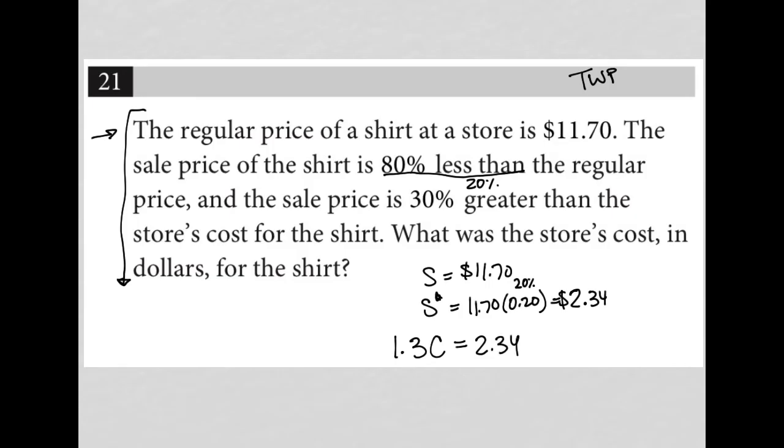So what does this 1.3C mean? It means the cost, which we're not aware of the exact amount of. But once you multiply it by 1.3, what's 1.3? 1.3 is a decimal version of 130%. 130% is the translation for 30% greater, right? It's 100% of what you started off with, plus an additional 30%, right? So it's the cost plus 30% is $2.34.